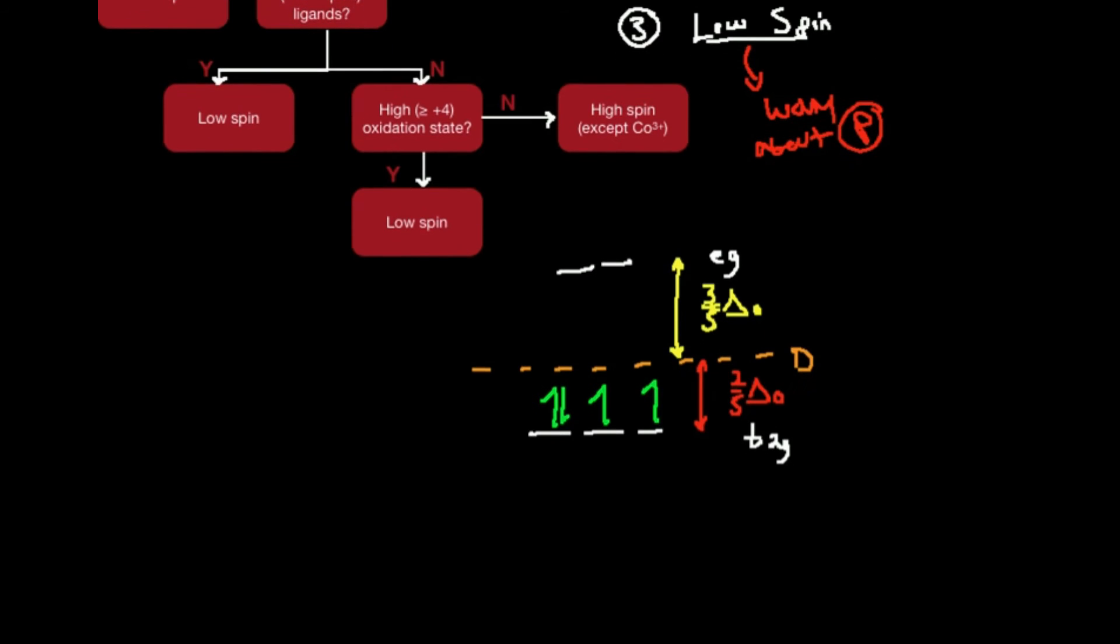Now that I have this diagram, I need to calculate the crystal field stabilization energy. The way I do that is I look at T2g first. T2g is two-fifths delta octahedral and I multiply that by the number of electrons in that set of orbitals, and that's four electrons. Then I subtract three-fifths delta octahedral times the number of electrons in the eg orbitals. That's zero, so that whole thing is zero. But then I have a cost. I have to subtract off the pairing energy. What is pairing energy?